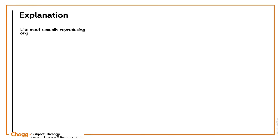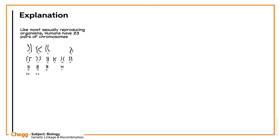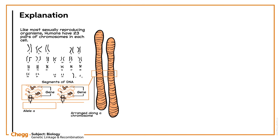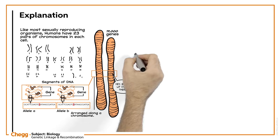Like most sexually reproducing organisms, humans have 23 pairs of chromosomes in each cell. Genes are segments of DNA arranged along a chromosome. There are a lot more genes than chromosomes — 19,000 genes on 23 chromosomes — so the genes line up tightly in a row on each chromosome.